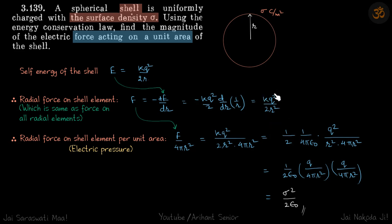So this is the force on the shell element or force on all the radial elements. Which means the force per unit area, which we need to find is this force divided by shell area, which is 4 pi r squared.